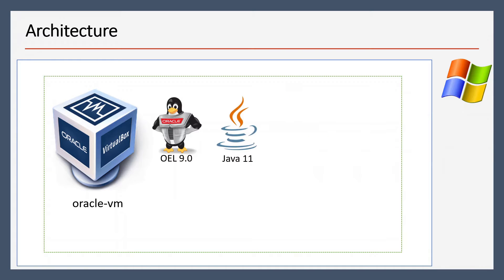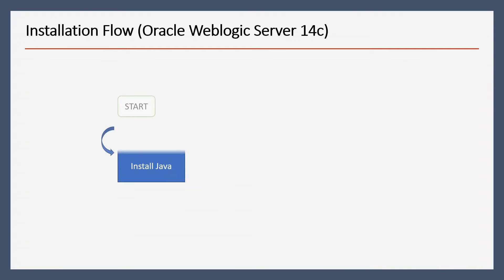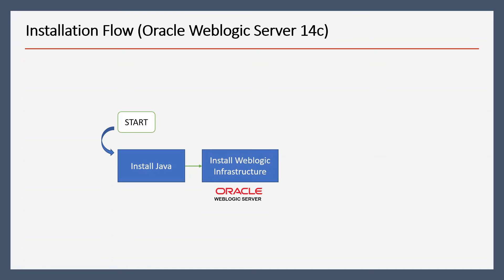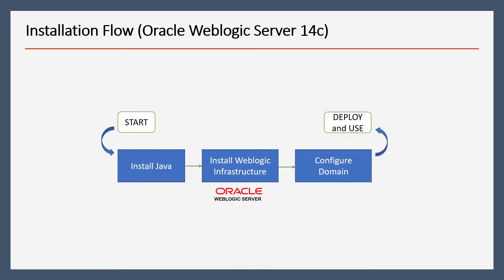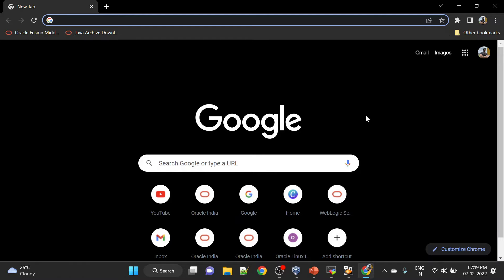In this video we are going to install Java 11 and then we will be installing Oracle WebLogic Server 14c. The installation flow will be: we will install Java first, then we will install WebLogic infrastructure, after that we will configure our domain. We will cover all three in this video.